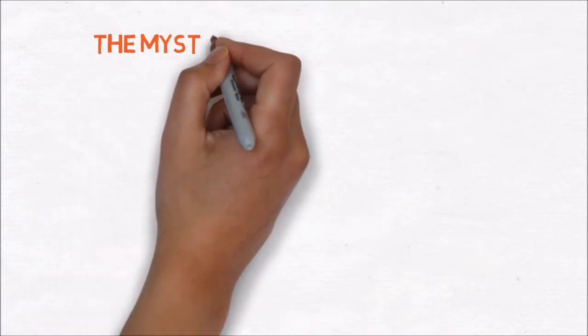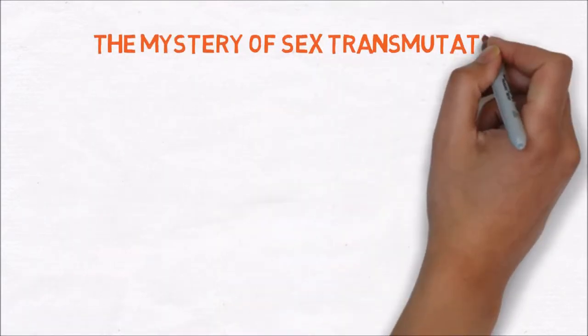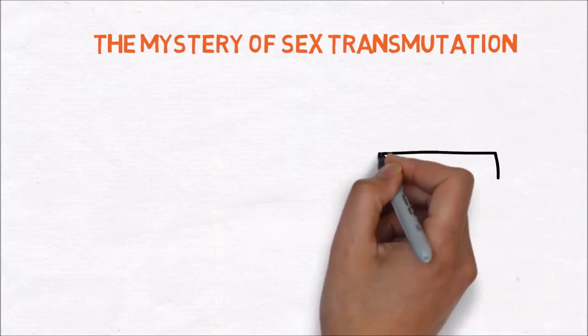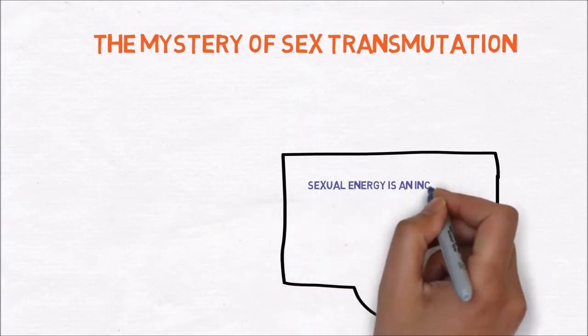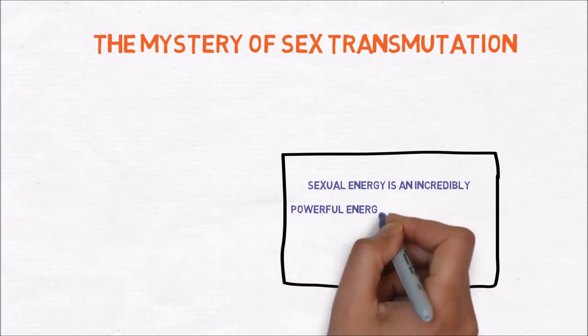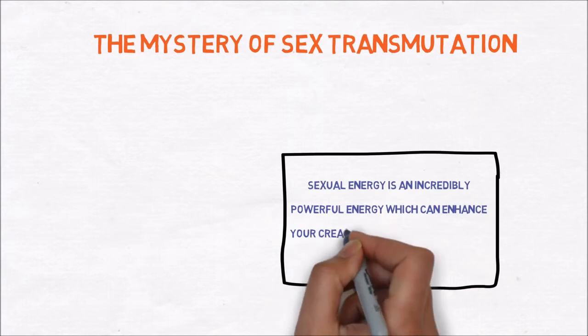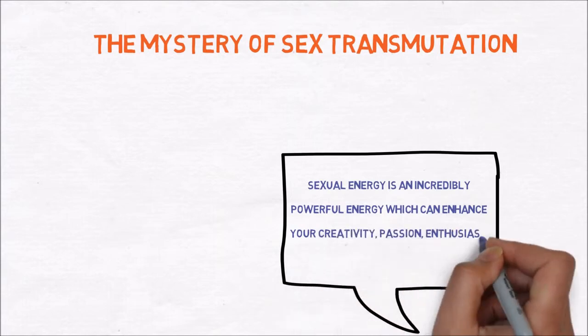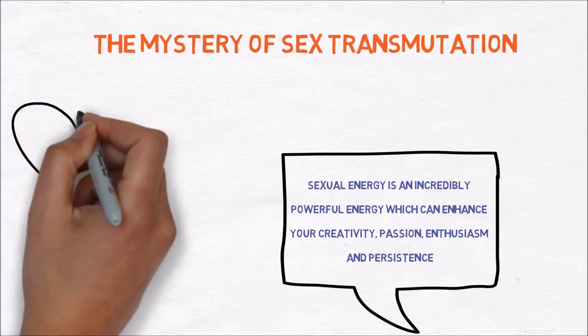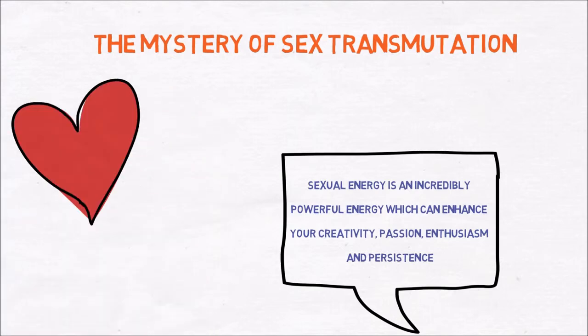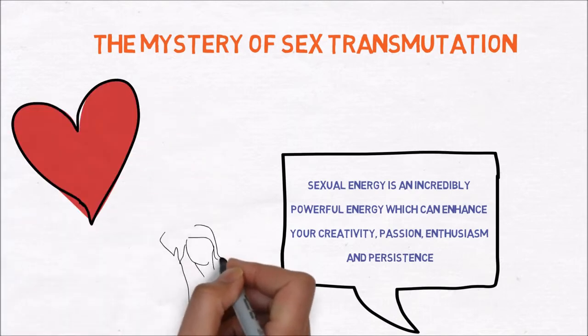Step 10 is the mystery of sex transmutation. This is one of the most controversial points in his book. Hill explains that sexual energy is an incredibly powerful energy which can enhance your creativity, passion, enthusiasm and persistence. Love, romance and sex can all be capable of helping men to achieve incredible things. That's why it's important to have a supportive partner.